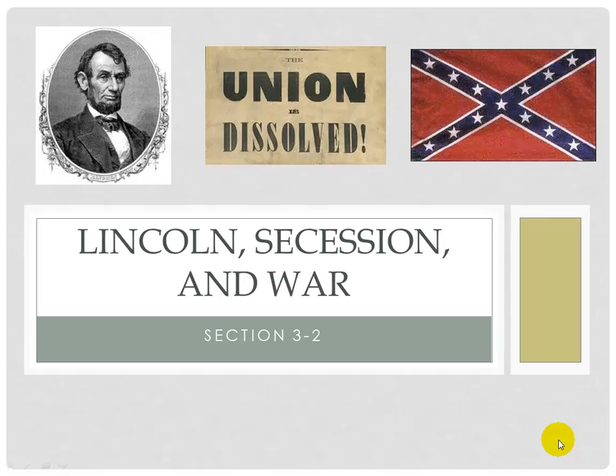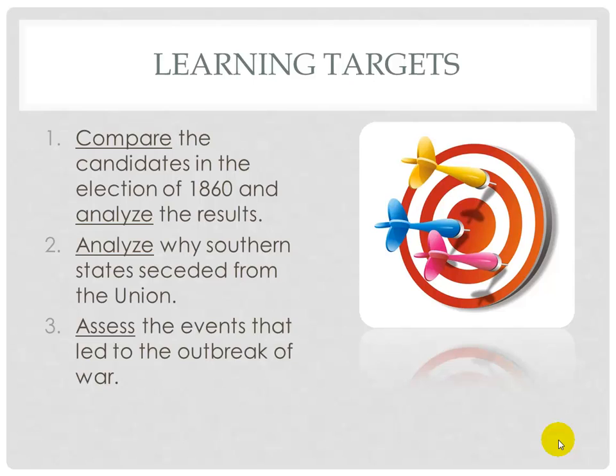Welcome back to U.S. History with Mr. Snyder. Today we're going to be talking about the beginning of the Civil War, starting with the election of 1860. Here are your targets for today: we're going to compare the candidates in the election of 1860 and analyze the results along southern and northern lines. We're going to analyze why the southern states seceded from the Union, and we're going to take a look at the first event of the war — the bombing of Fort Sumter.